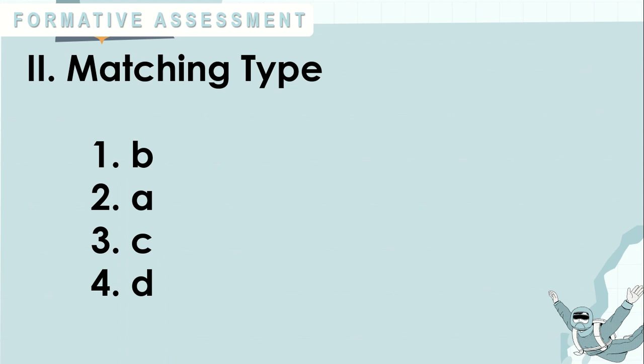Here are the correct answers. For number one, letter B. Number two, letter A. Number three, letter C. And number four is letter D.